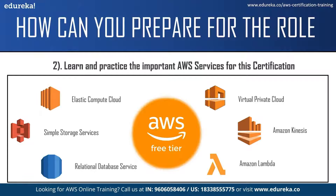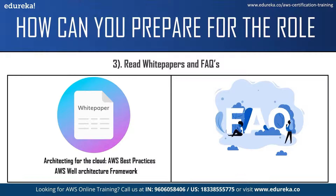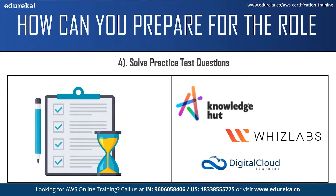AWS free tier account allows you to access over 85 AWS services for free. All you have to do is submit the required information and you can start practicing 85 plus services for free. Moving on to the next step, which is referring to white papers and the frequently asked questions. White papers will give you technical knowledge about various AWS concepts and services. Two of the best white papers for the certification would be 'Architecting for the Cloud: AWS Best Practices' and 'AWS Well-Architected Framework'. The frequently asked questions will help you clear your doubts regarding the certification. The next step is solving practice test questions. You can find practice test questions on various websites such as KnowledgeHut, Whizlabs, and Digital Cloud Training.